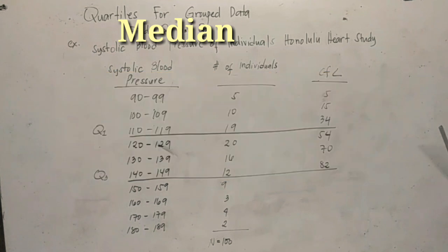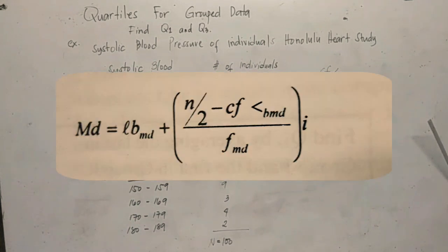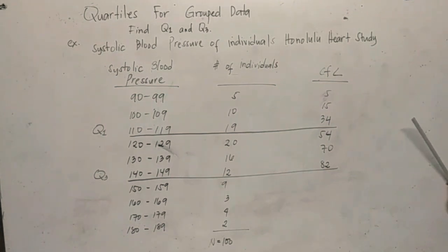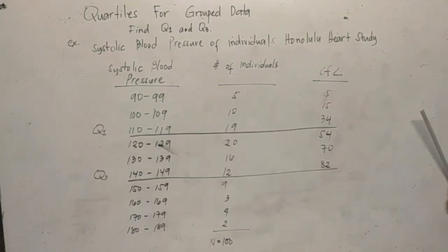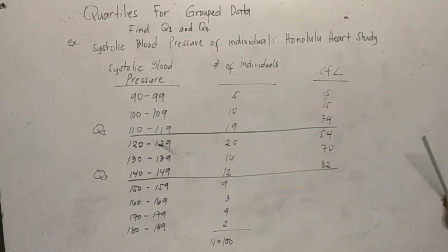If we can remember, the formula of the median for group data is the lower boundary of the median class plus the quantity n over 2 minus the cumulative frequency below, all over the frequency of the median class. The same formula is used for the Quartiles for Group Data — the difference is just n over 2 becomes n over 4.